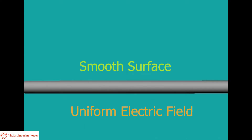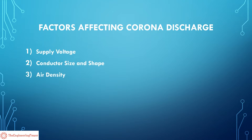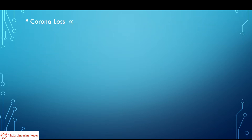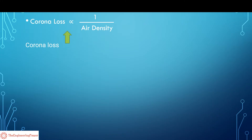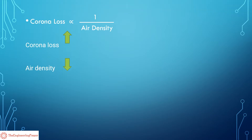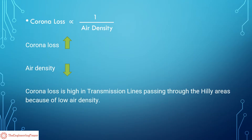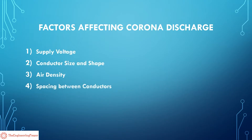Another factor is air density. Corona loss is inversely proportional to air density — that is, corona loss will increase with a decrease in air density, and vice versa. Corona loss is high in transmission lines passing through hilly areas because of the low density of air in those areas.